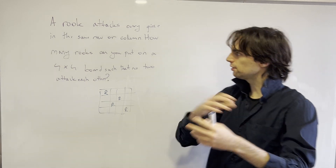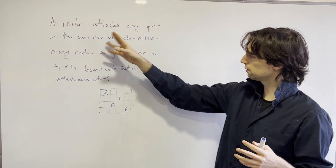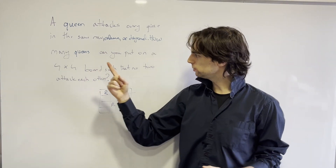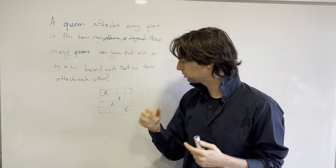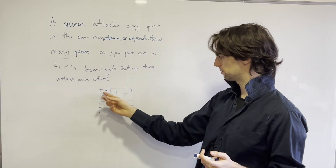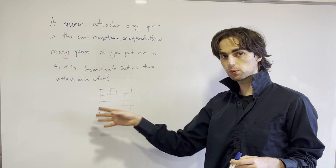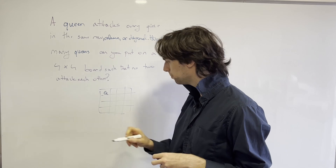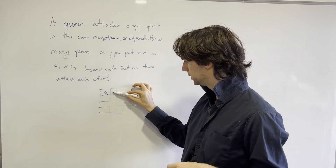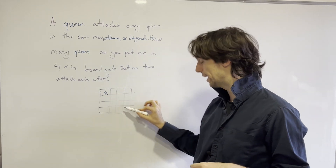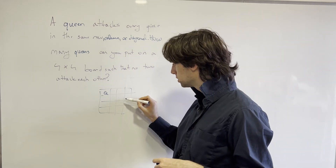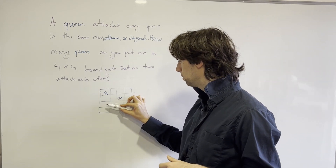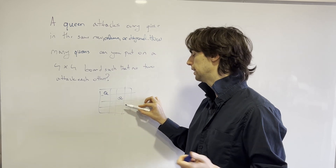To illustrate this point further, instead of a rook, let's put a queen. The question is now a lot more interesting. Say we're looking to place queens on the four-by-four board. I put my first queen here, then I can't put queens in this row, this column, or the diagonals. I put another queen here, and now in this row I can't put any other queen.